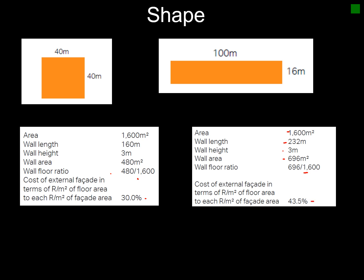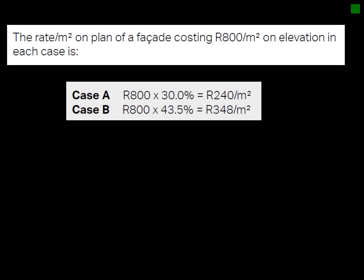You can see the ratio is higher. Looking at it in practical terms: a facade costing 800 rand per square meter on elevation, with a cost ratio of 30%, works out as follows. 800 rand per square meter times 30% gives you 240 rand per square meter just for your external envelope or walls.